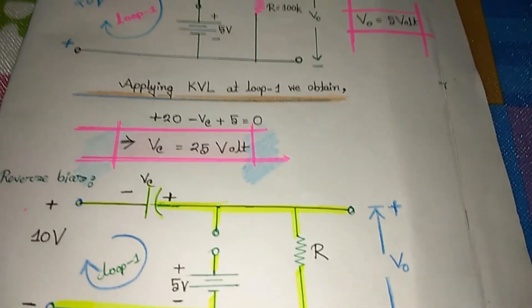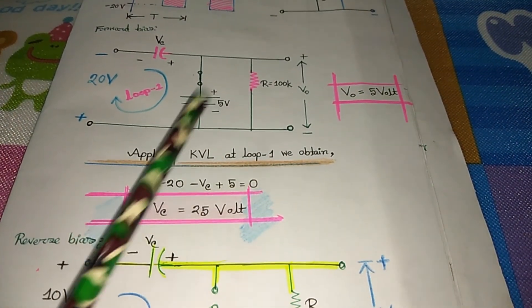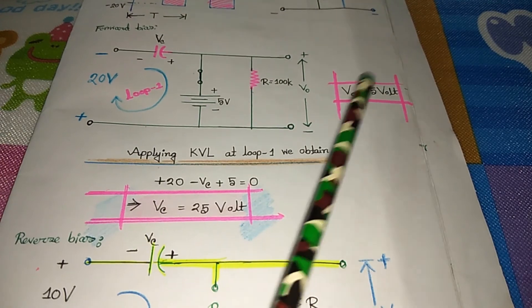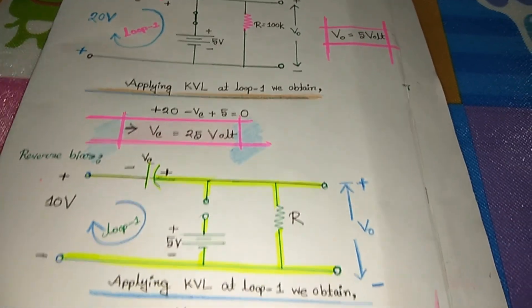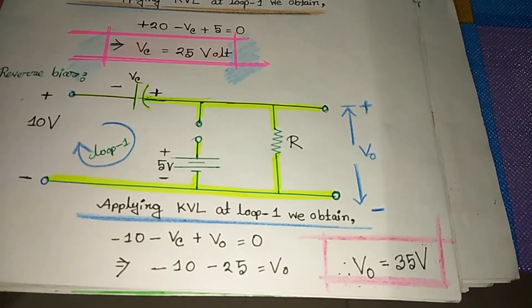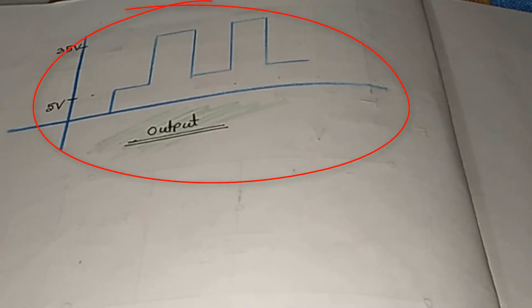Now we found the value of V-naught. During the forward bias condition we had V-naught = 5 volts, and from calculation V-naught = 35 volts. Now let me draw the output diagram. Always remember: we first identified the positive half cycle.